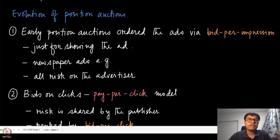Position auctions have evolved over time. The very early position auctions were ordering ads via bid per impression. They were charging advertisers based on the bids they placed for each impression. Just to show that ad at that position, they would be charged a fixed amount of money. This is similar to newspaper ads, which on the first page have higher cost than internal pages. This puts all the risk onto the advertiser, whether they will be paying this money without knowing whether that ad will ever be seen or clicked.